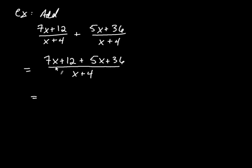Now, we add the polynomials, or we add the like terms. So we have 7x plus 5x, which is 12x, plus, let's see, 12 plus 36 is 48, divided by x plus 4. Now, remember, we like to simplify if we can. And I can't cancel at this stage, but notice how I can factor that numerator.